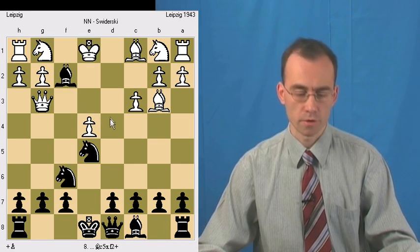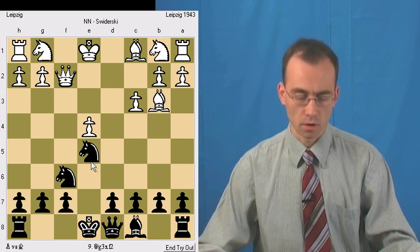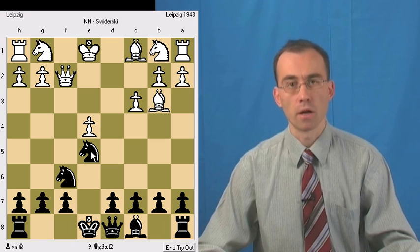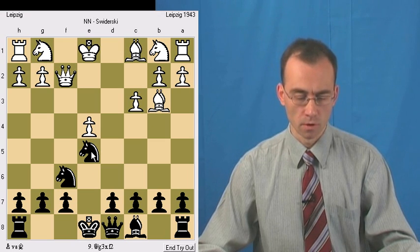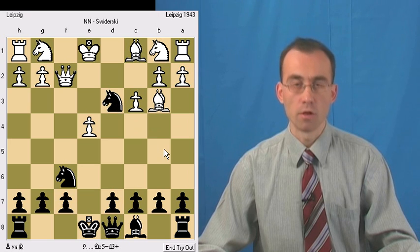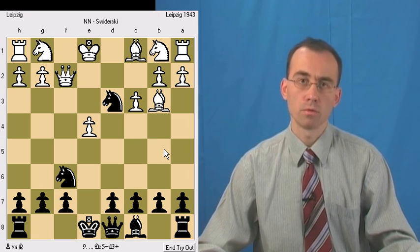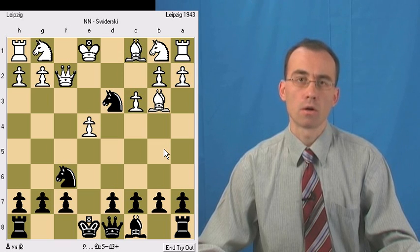And the other move we have is queen takes bishop. But then the other knight, the other Black's knight is in place to deliver check, deliver fork. So White loses queen anyway.